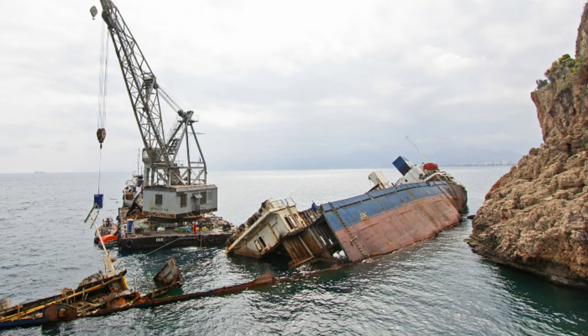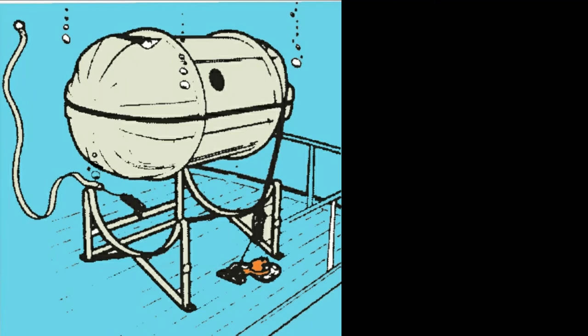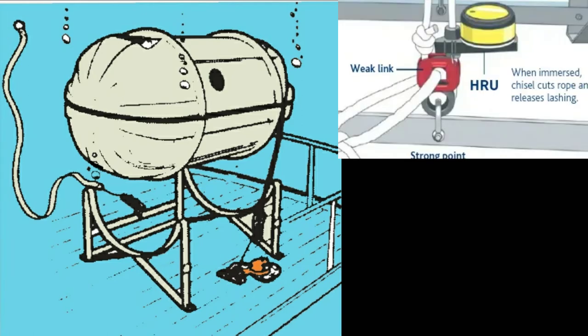Imagine a vessel suffers a disaster and subsequently sinks. When submerged to a depth of 1.5 to 4 meters, the HRU operates automatically. That is, the chisel cuts the rope and releases the lashing.